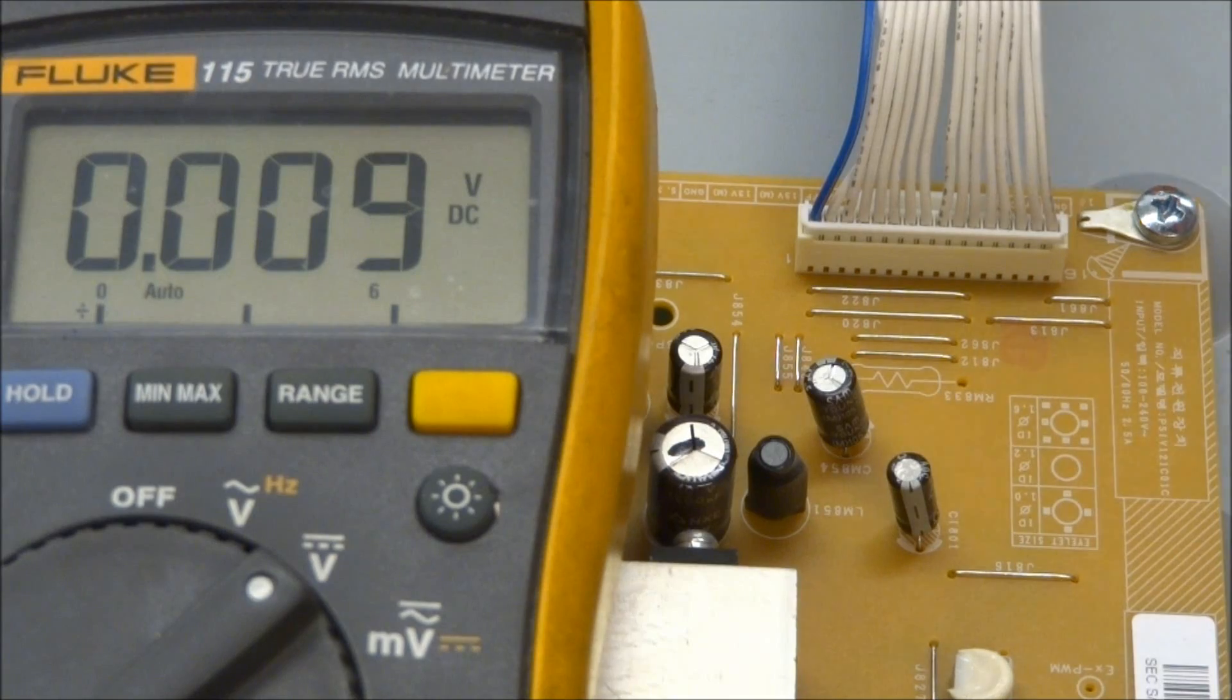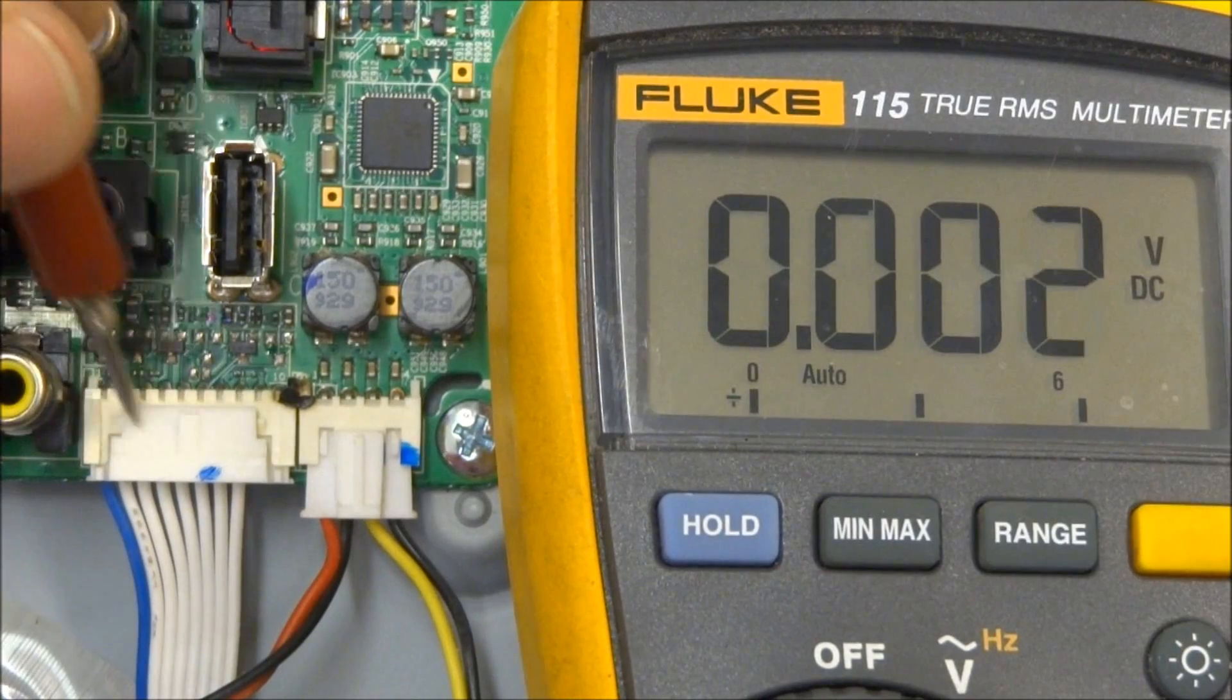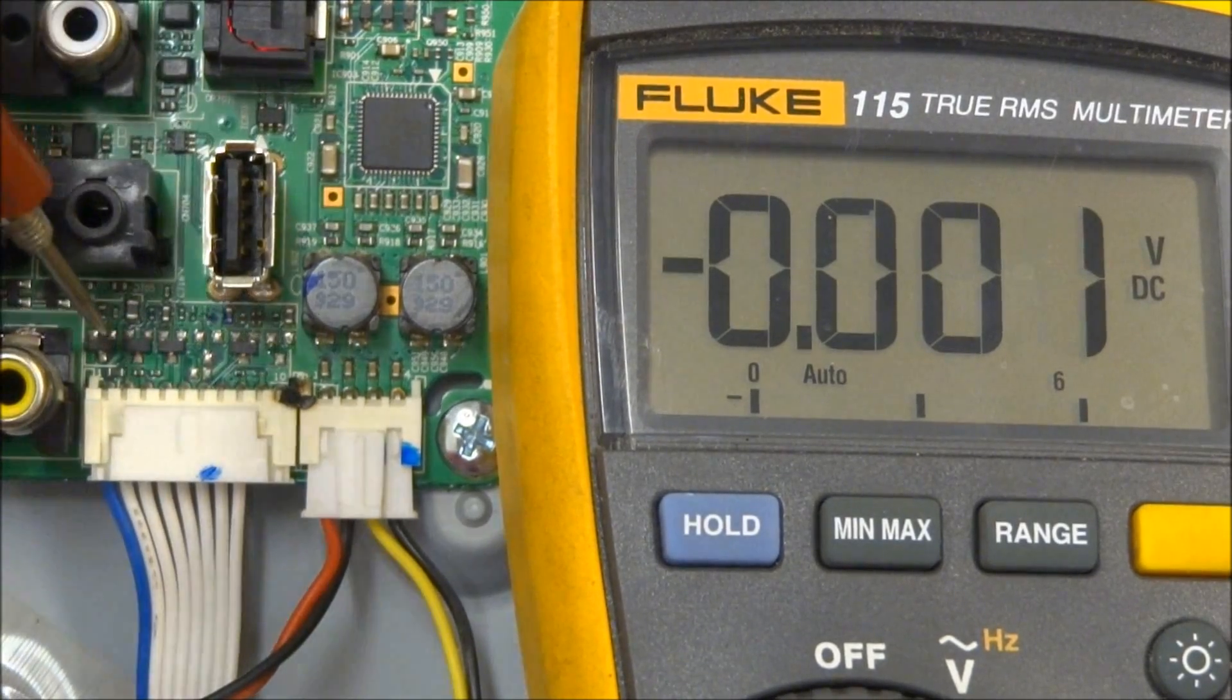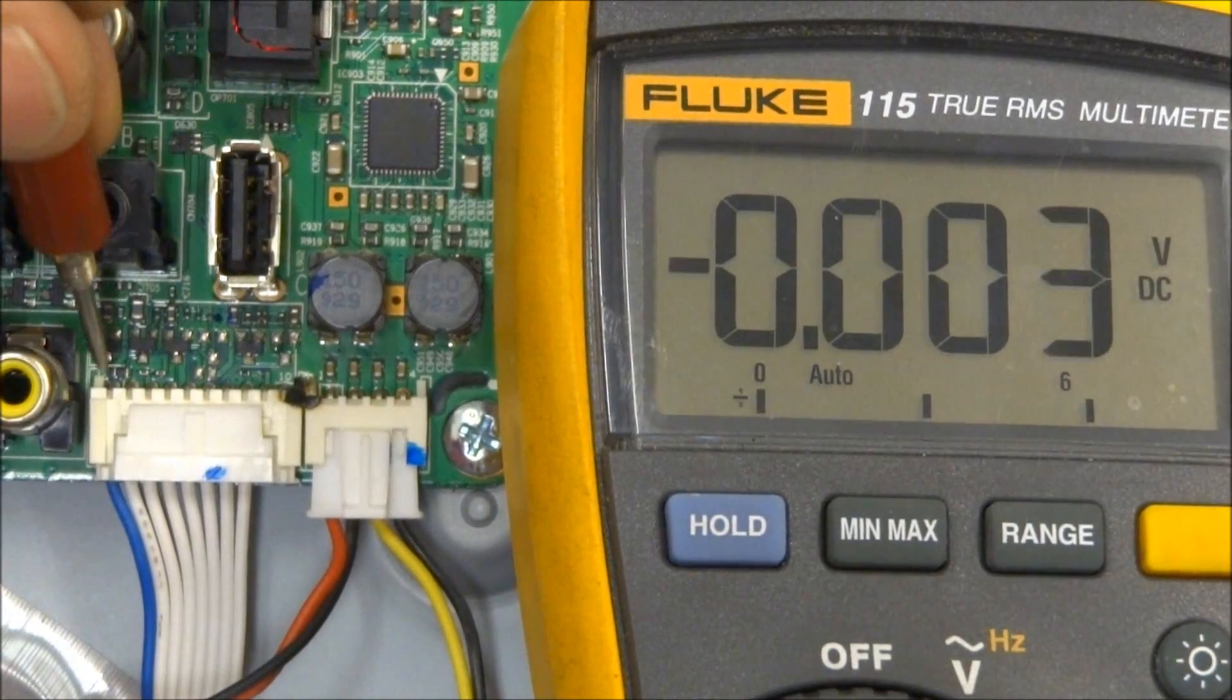Now let's take a look at a couple connectors on the main board. I'll show you the connector that runs from the main board to the keypad as well as to the remote control receiver. Okay, so here's the connector right here. This is a 10-pin connector. We'll start with pin number 1.